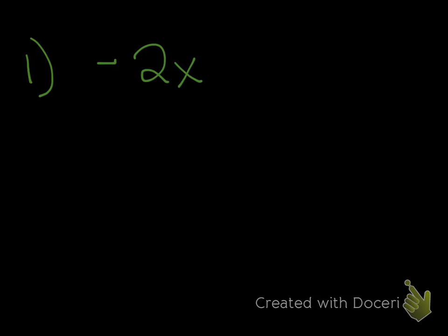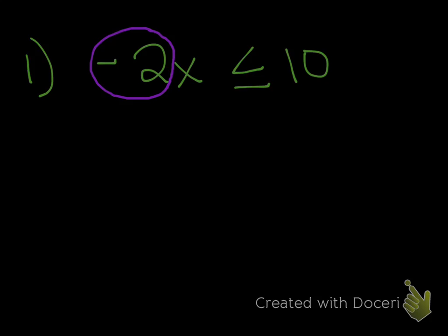Let's do a couple of them. I want you to star that part on your paper where it says rules for inequality at the top and put a big highlight on that, because you want to remember it — that's the hardest part. The first one is negative 2x is less than or equal to 10. The negative 2 is a coefficient of x. If you ever have a negative number being multiplied by the variable, you're going to be using a negative — circle it and write yourself a note that says 'flip' to remind yourself.